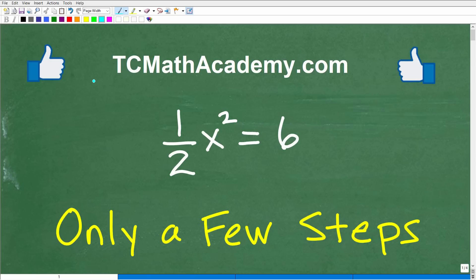Hello, this is John from TC Math Academy, and in this video we're going to solve this equation right here. Looks pretty straightforward. What we have here is 1/2 x squared is equal to 6.